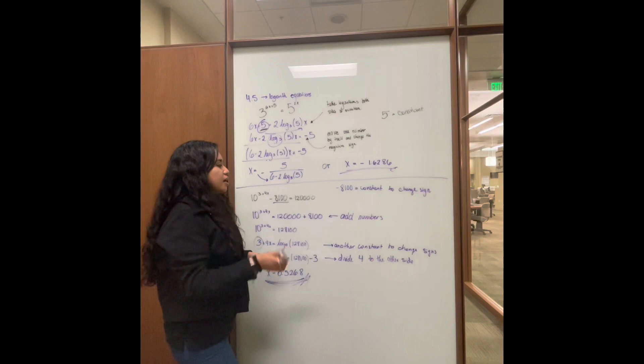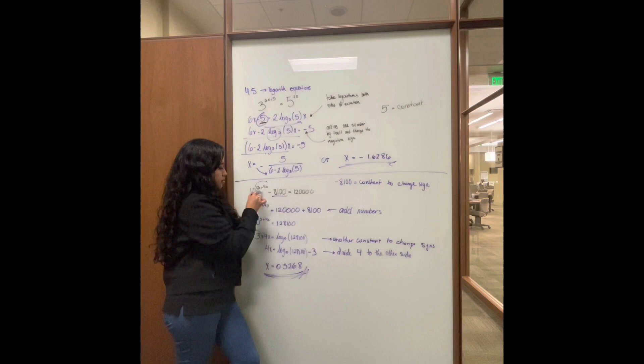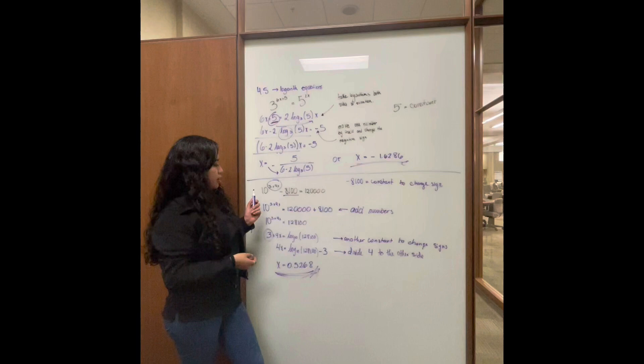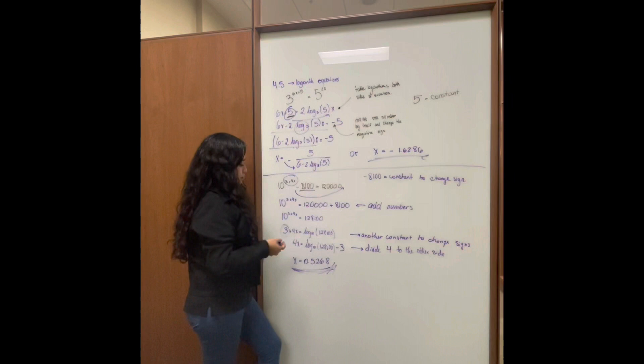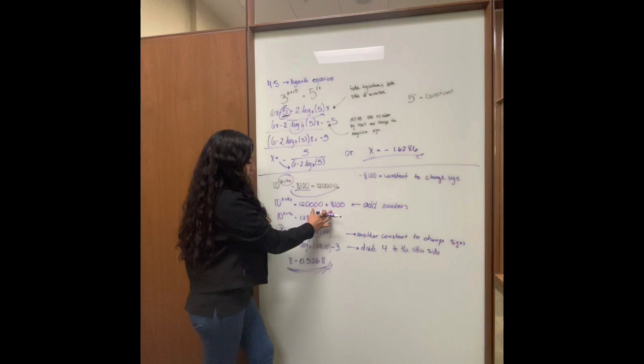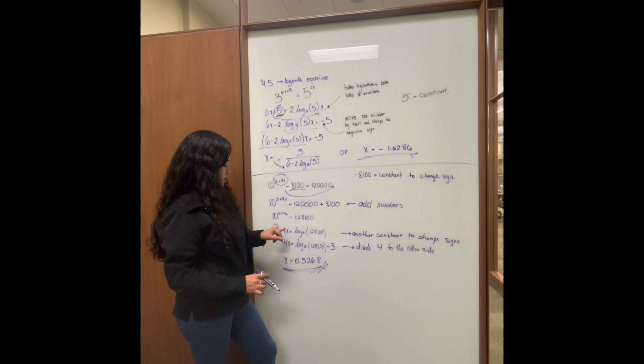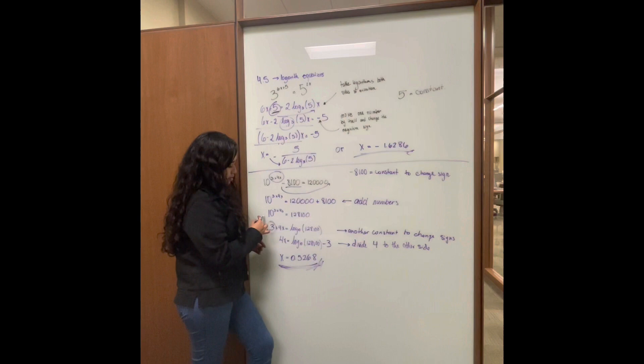Another example we're going to do right now: as we can see, there are some exponents in here, but we need one alone. So in this one, the constant is going to be this one. When it goes to the other side, it's going to change the sign. So it goes in here, and then we're going to add these numbers. This is going to be the result of adding these numbers. Then this logarithm base ten goes to the other side.